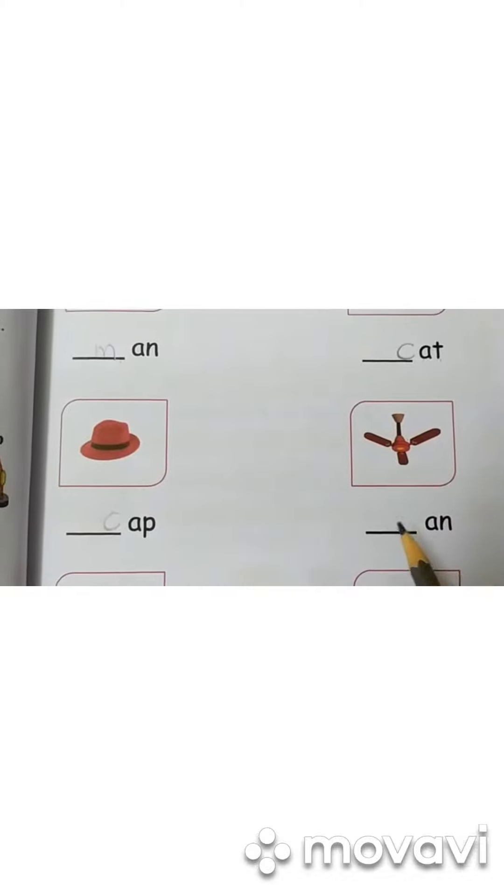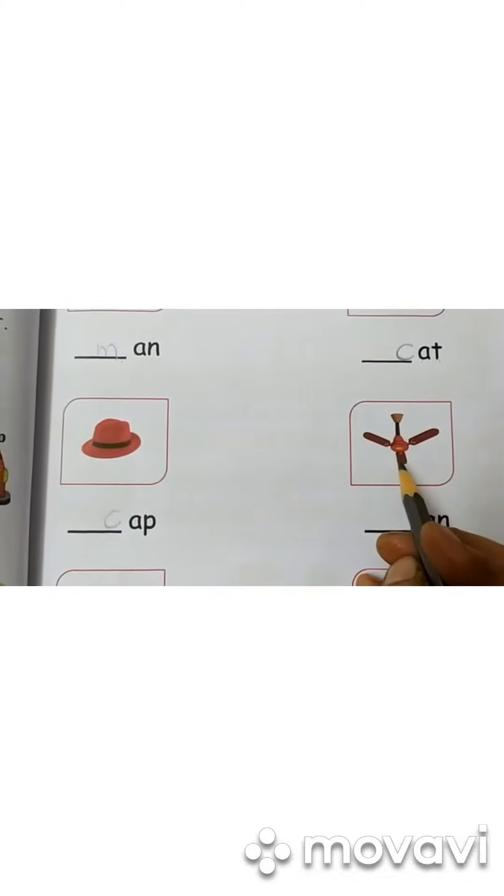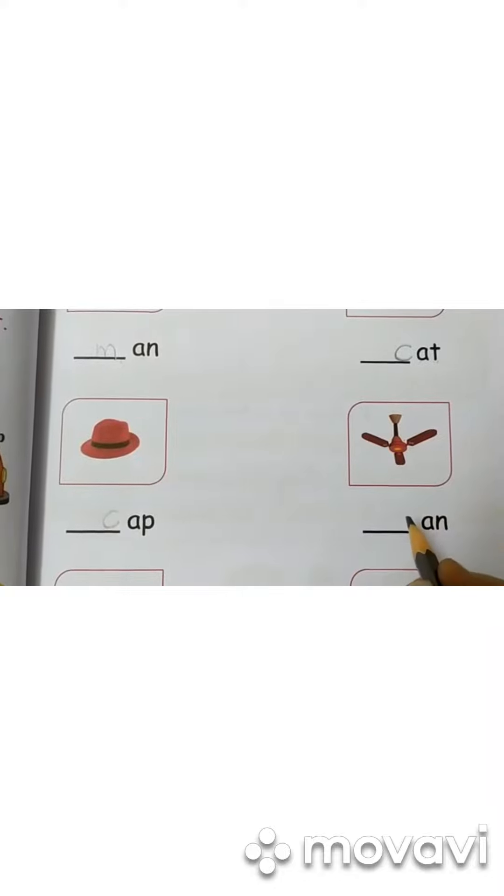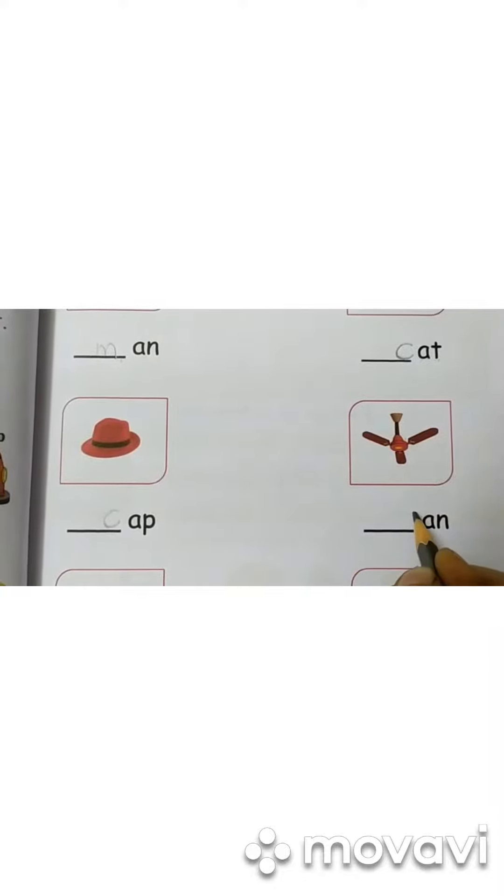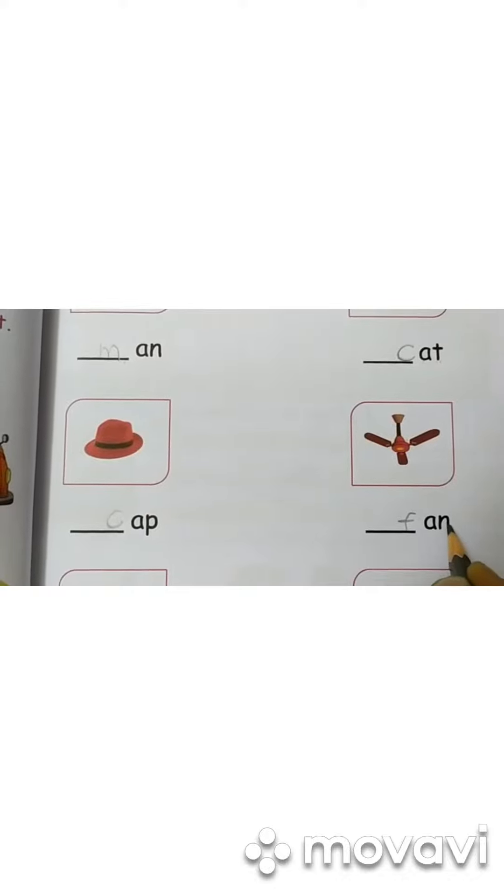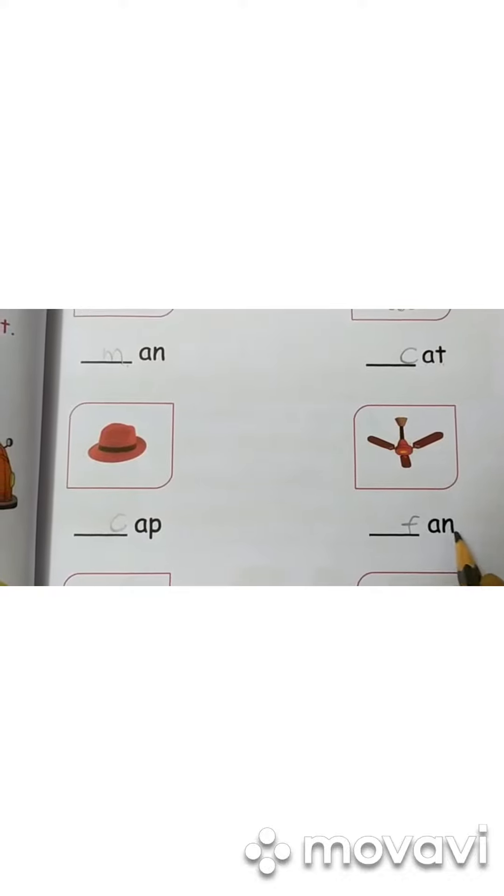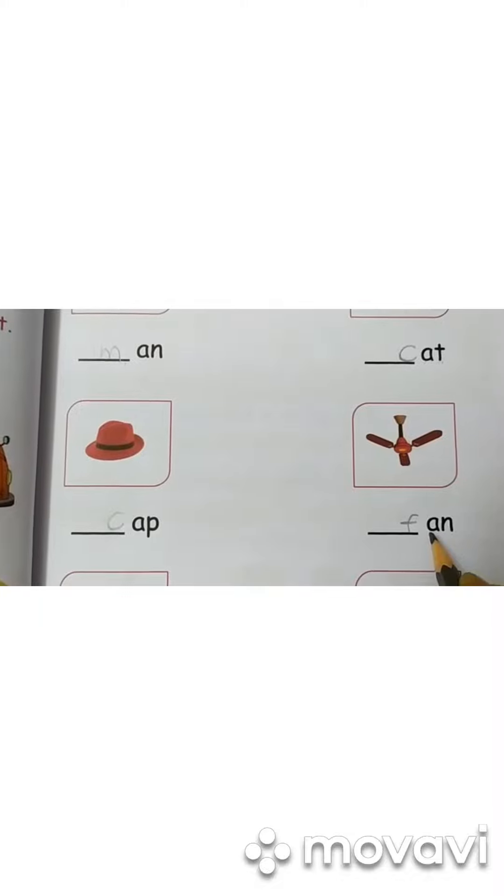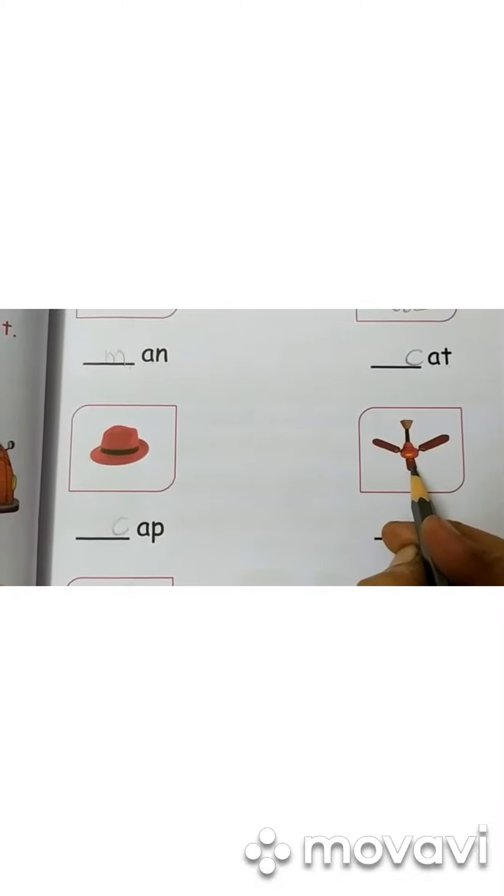Okay children, now see here. What is this? This is fan. So children, write here. F-A-N. F-A-N. Fan. This is fan. Okay?